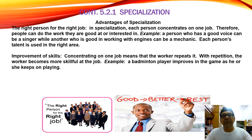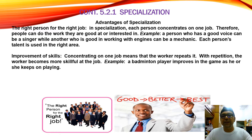Advantage: the right person for the right job. In specialization, each person concentrates on one job only. Therefore people can do the work they are good at or interested in. For example, a person who has a good voice can be a singer — singer is a specialization also. For another who is good at working with engines, he can be a mechanic. Each person's talent is used in the right area. So every specialization is focused on the area that they are good at. Improvement of skill: concentrating on one job means the worker repeats it. With repetition, the worker becomes more skillful. For example, a badminton player improves the game as he keeps on playing.